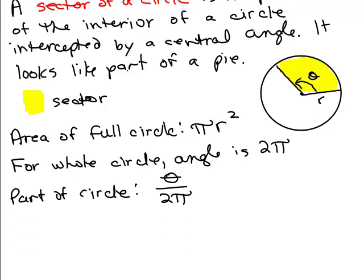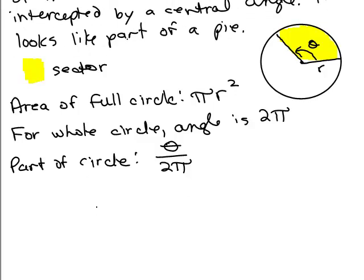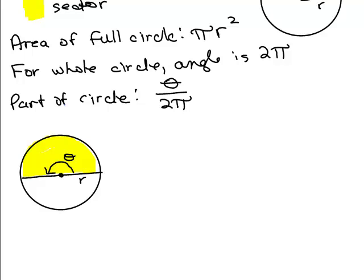So what do I mean by that? Let's say that I wanted half the circle. When we visualize this, we can see we've got half of the circle. But what we want to know is, does this theta over 2 pi make sense?